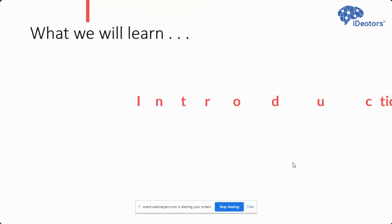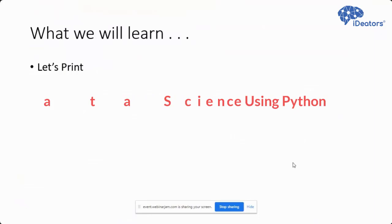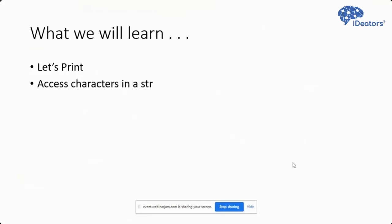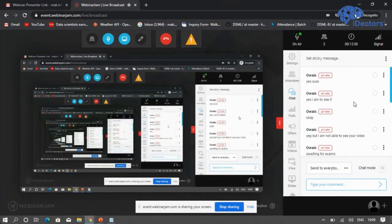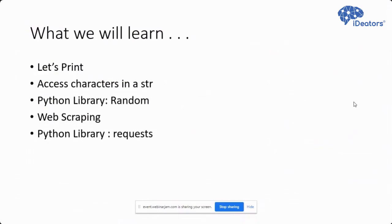Today we are going to learn: first, an introduction to Python; then what is meant by a string and how to access characters from a string; then we will explore Python libraries, specifically the random library; then we will use that random library in web scraping, and for web scraping we will use another library known as requests. After completing this, we will be able to do web scraping.